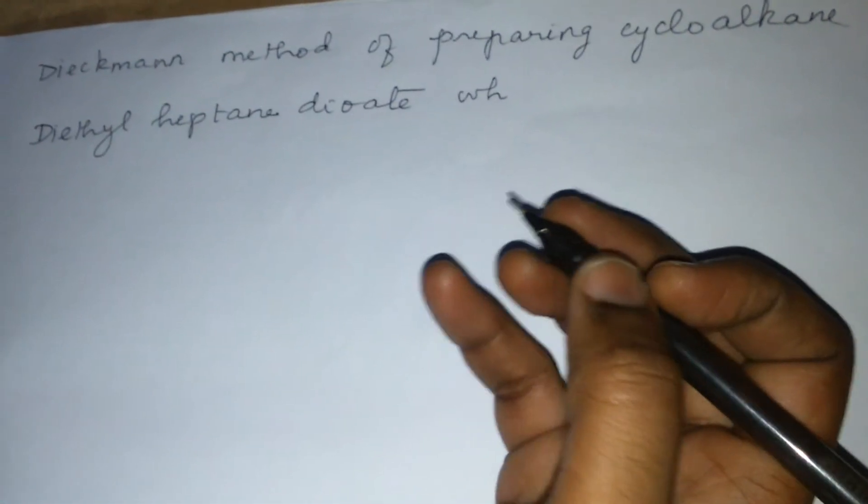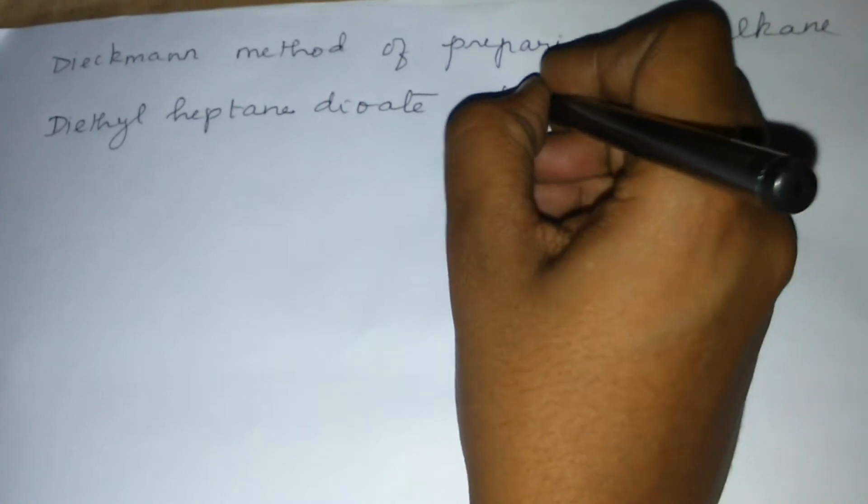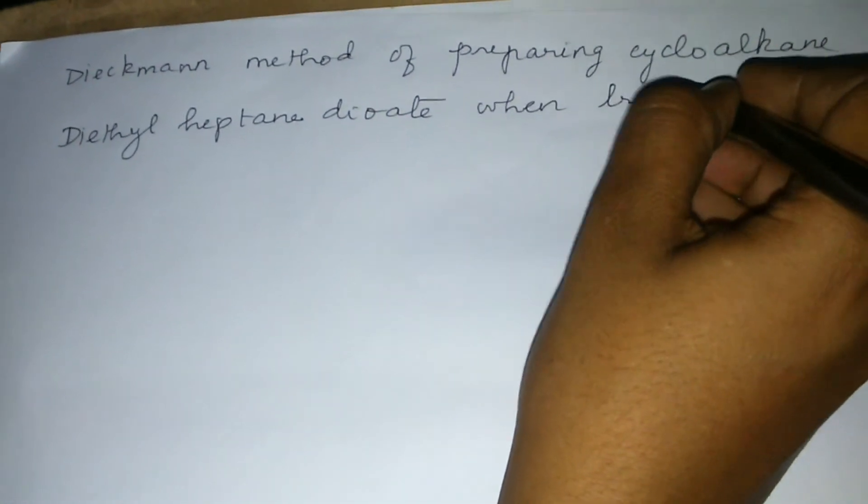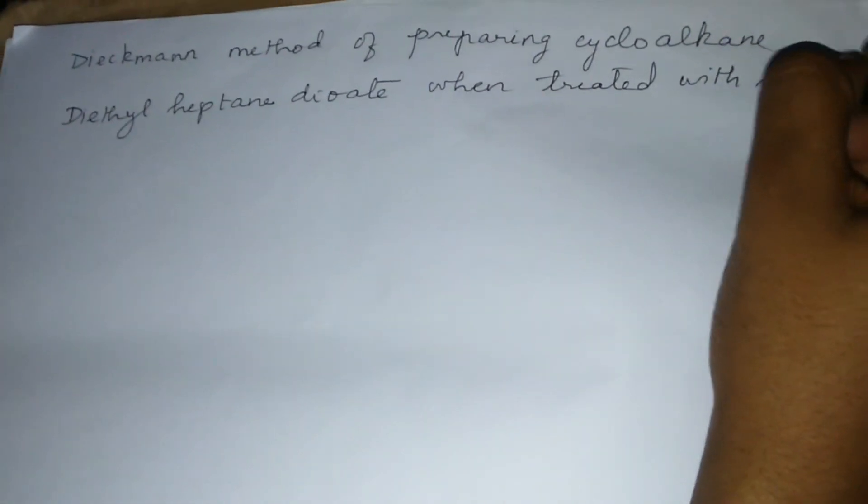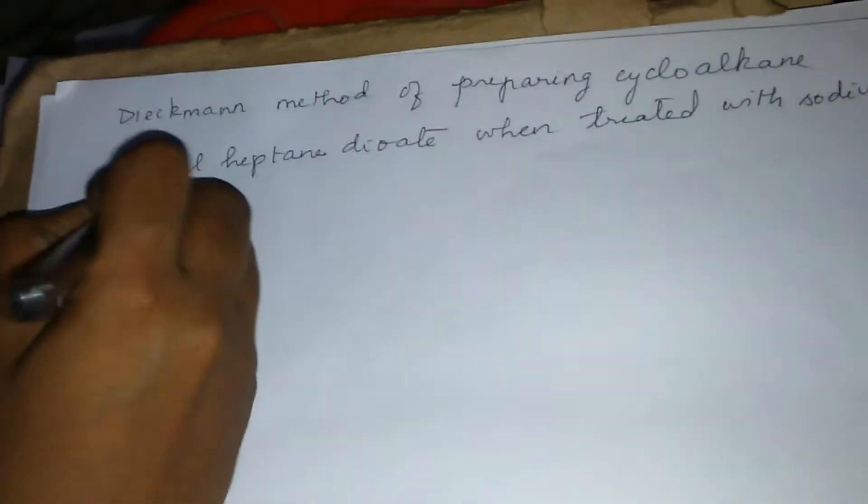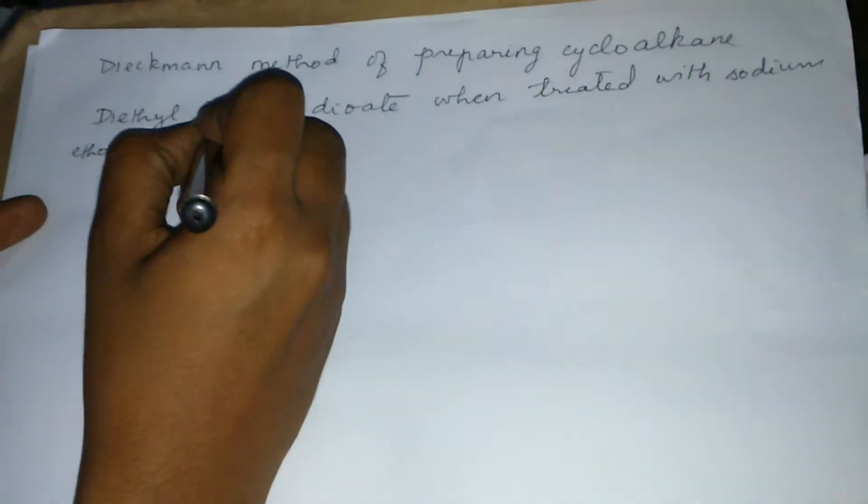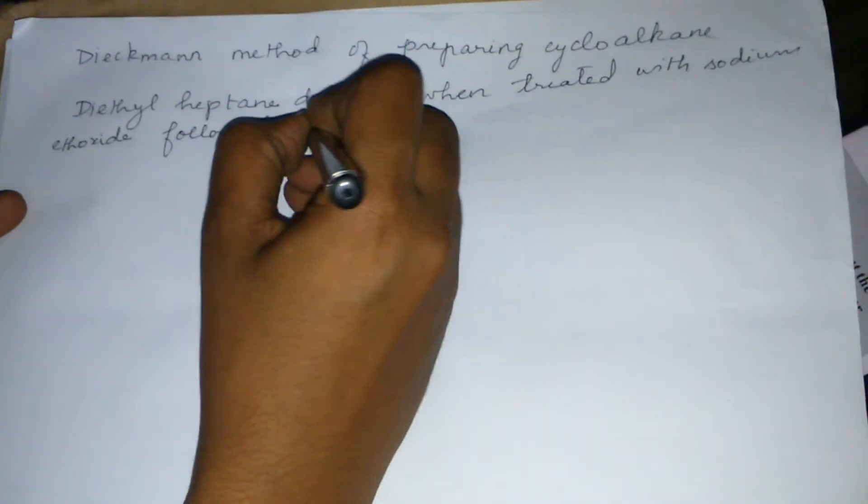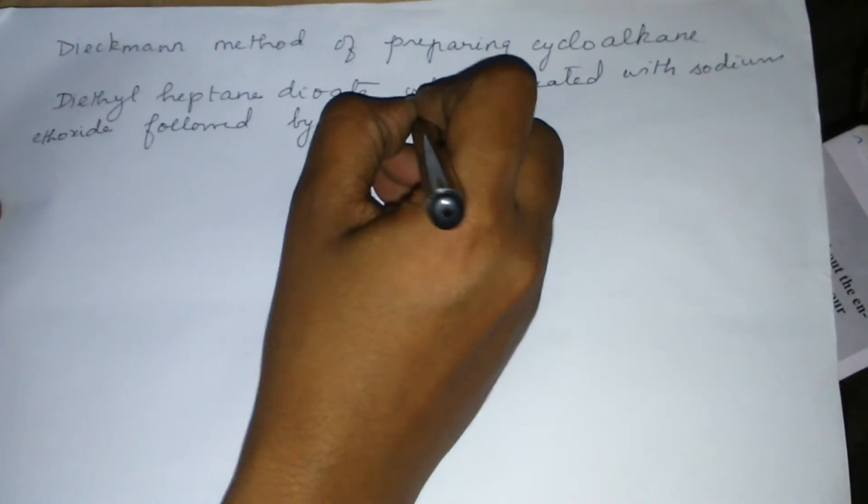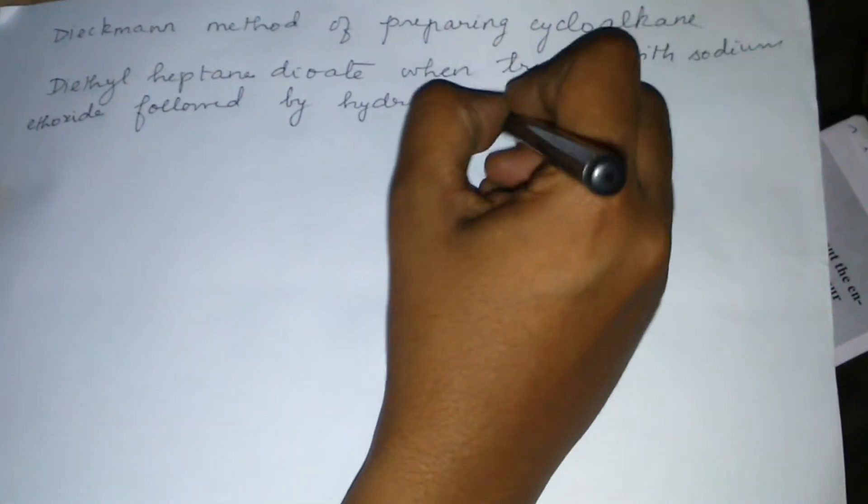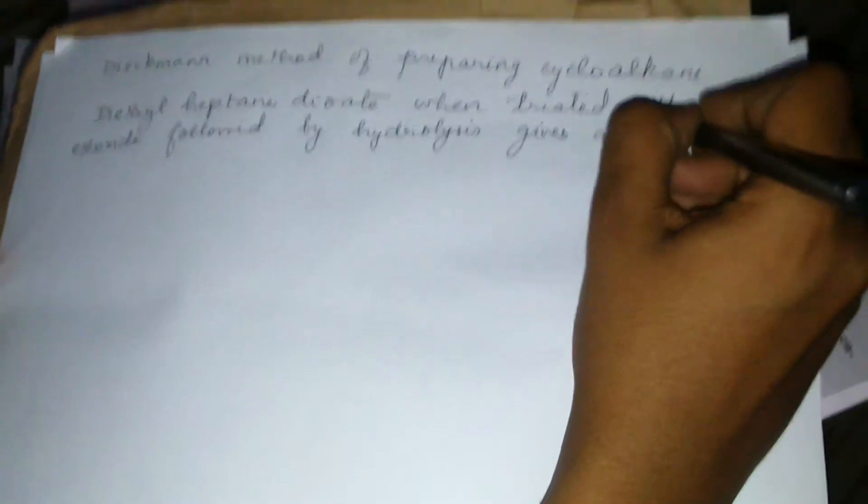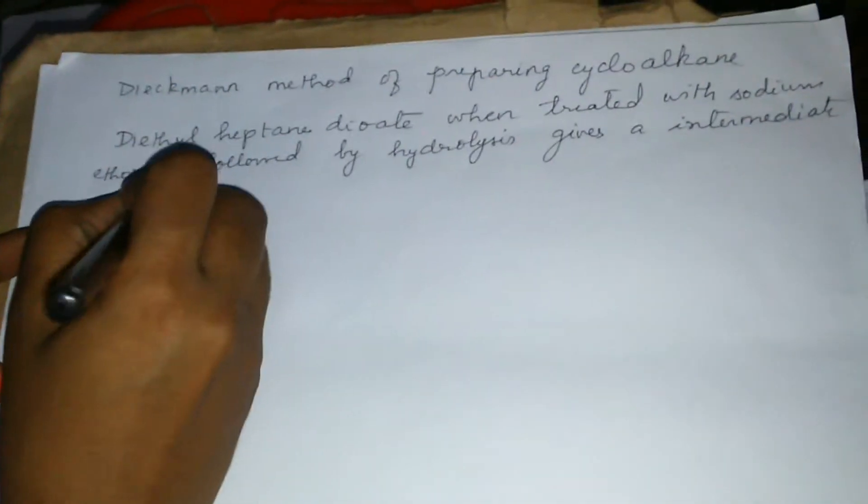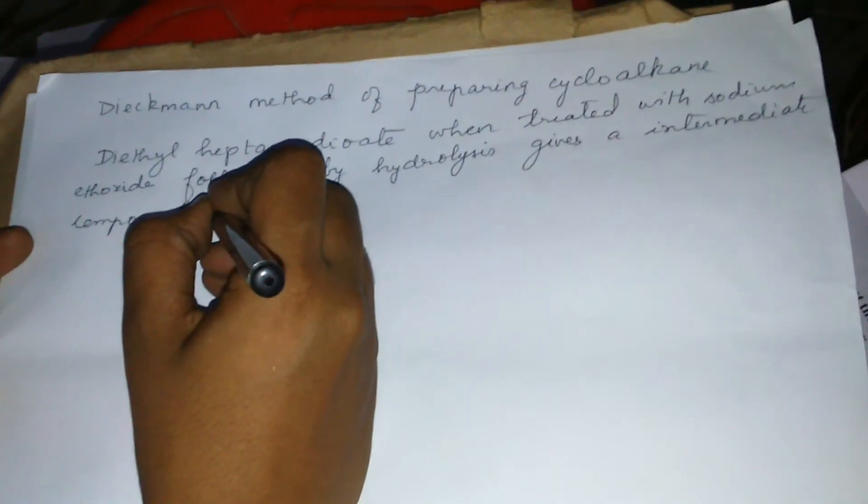Dieckmann method of preparing cycloalkane. Diethyl heptanedioate when treated with sodium ethoxide, followed by hydrolysis, gives an intermediate compound, cyclohexanone carboxylic acid.